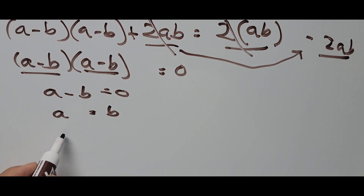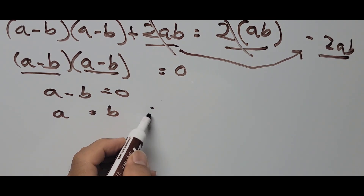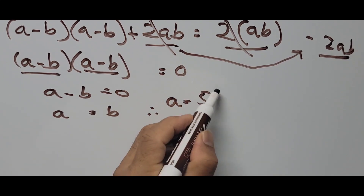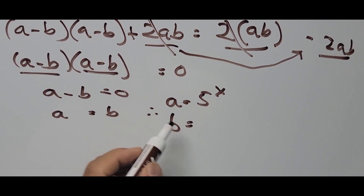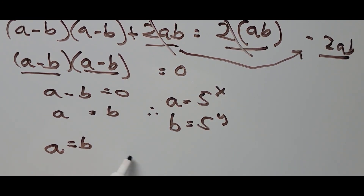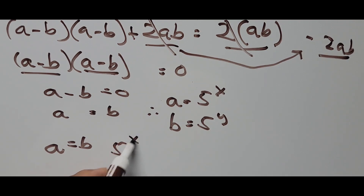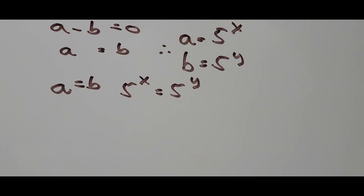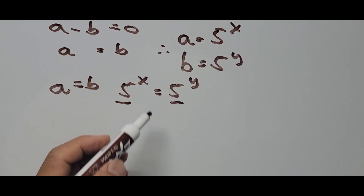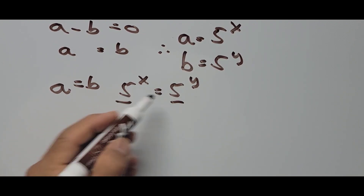Since a was substituted as 5 raised to x, and b was substituted as 5 raised to y, a equals b means 5 raised to x equals 5 raised to y. Since they both have the same base, it simply means x is equal to y.